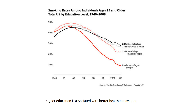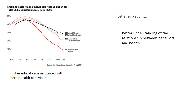Staying on the education track, higher educated people are less likely to smoke. Look around amongst your friends — the ones who smoke are probably those without as much education. Better education gives us a better understanding of the relationships between behaviors and health. If you're educated, you know that smoking is bad for your health, that certain foods are bad for you, and that sitting too much is harmful.